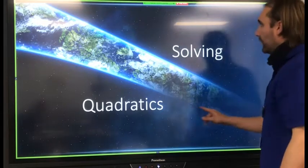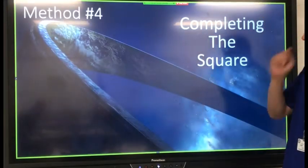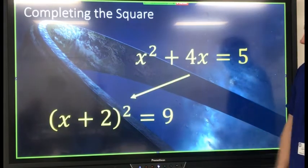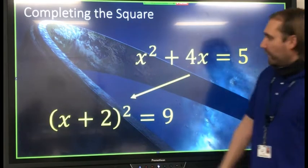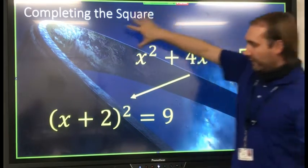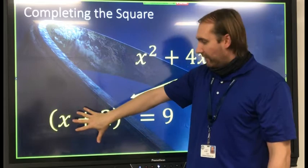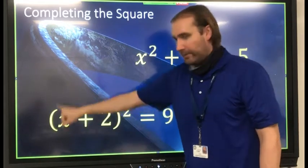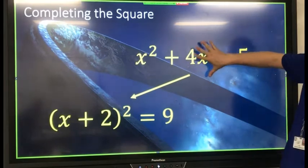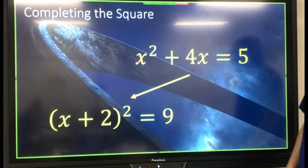Alright, so the first method for the day, our fourth method total, is completing the square. Basically completing the square, you're taking a quadratic that cannot be factored and you're forcing it into not only something that can be factored, but it factors into a perfect square. Note that we are moving our constant c to the other side. That's going to help us.